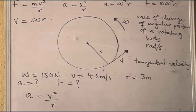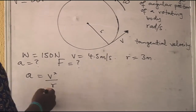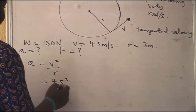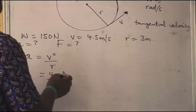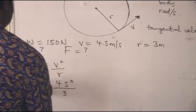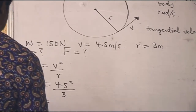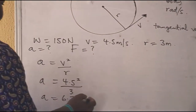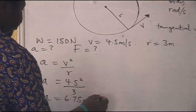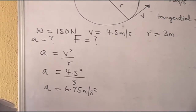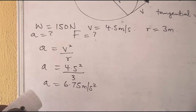From the equations listed, centripetal acceleration a = v²/r. We have v and r, and the units are already standard. Substituting: a = (4.5)² / 3. The acceleration is 6.75 meters per second squared. Because it is a centripetal acceleration, the unit remains meters per second squared.